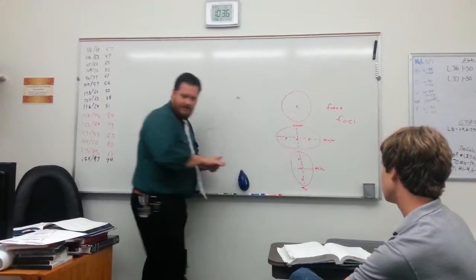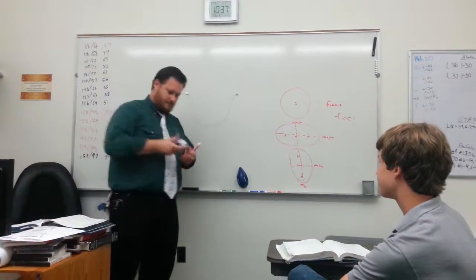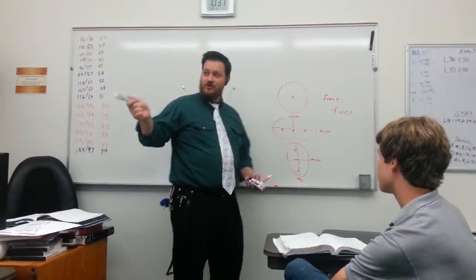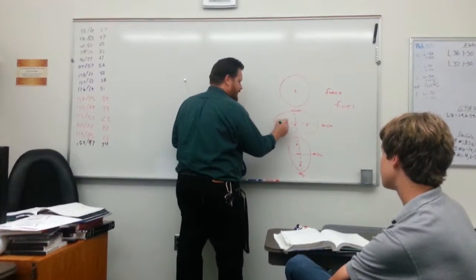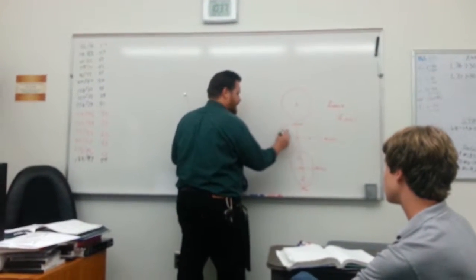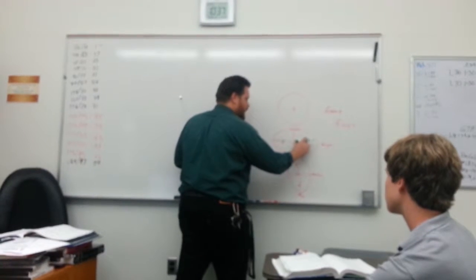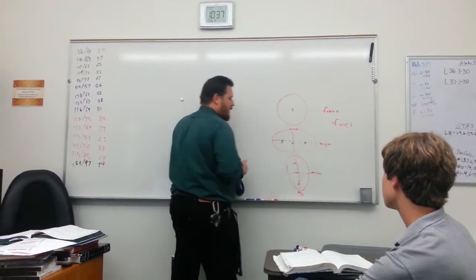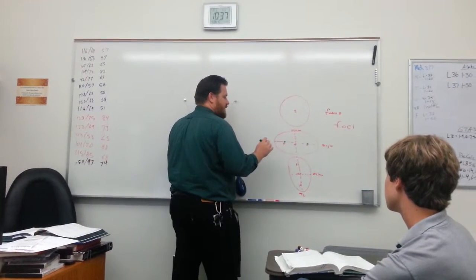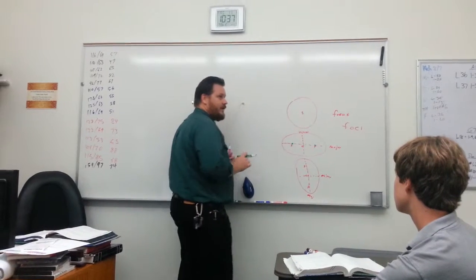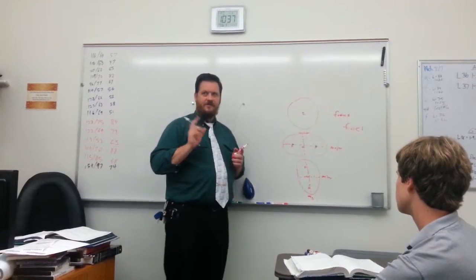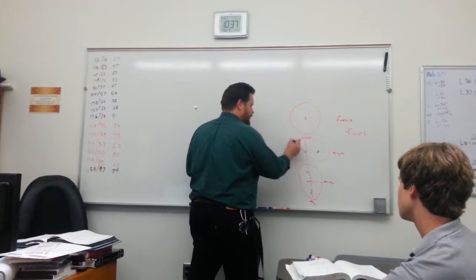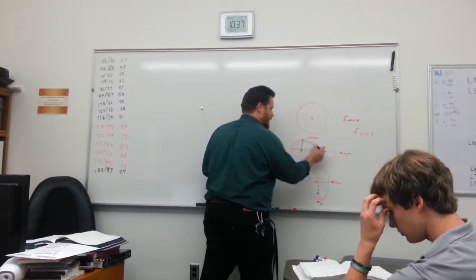And the way we define things... Wow. I can't say it. Good start. Is... Can I sign language? The way we define the ellipse is... The two foci... Any point on the ellipse is... The sum of the distance to the two foci is constant.